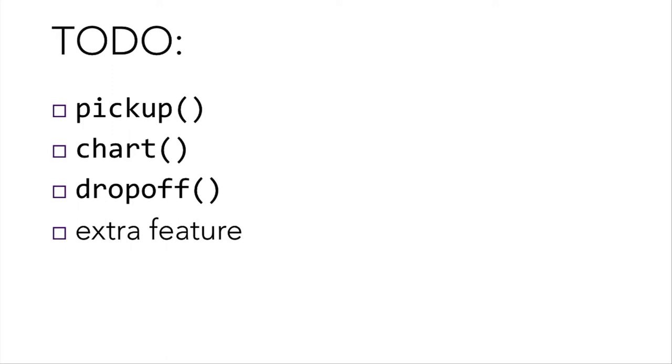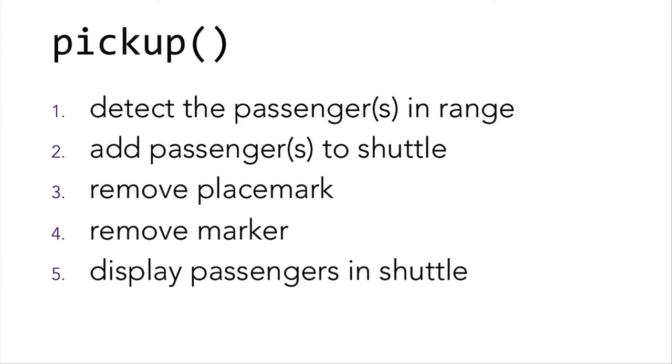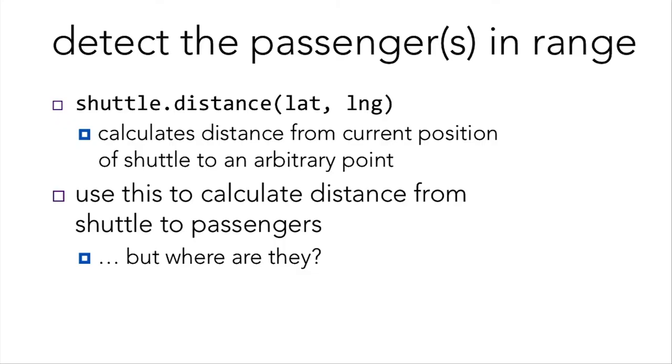So what do we need to do for the PSET? We need to allow users to pick up staff members, display all of the staff members currently in our shuttle, and drop them off. We'll also talk about extra features. For pickup, the faces of CS50 staff have been planted all over campus, where each face is implemented as a placemark on the 3D Earth and as a marker on the 2D map. When the user clicks the pickup button, we want to add nearby passengers to the shuttle and remove their placemark from the world and their marker from the map. The function shuttle.distance, passing in the latitude and longitude, calculates the distance from the current position of the shuttle to the specified point.